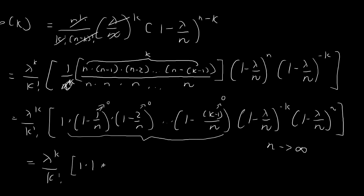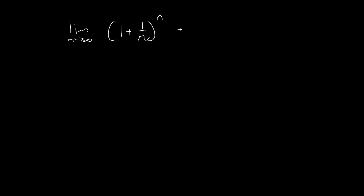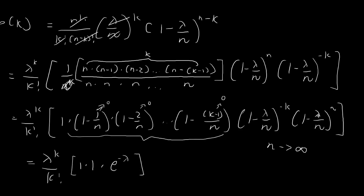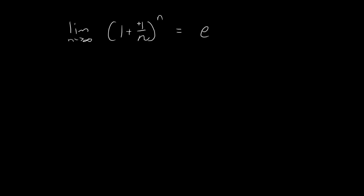This term here will become e to the power of negative lambda. The reason why is that the limit as n tends towards infinity of 1 plus 1 over n to the power of n equals e. There is a heuristic argument we can make when, instead of 1, we have a constant — in our case, the constant is negative lambda.